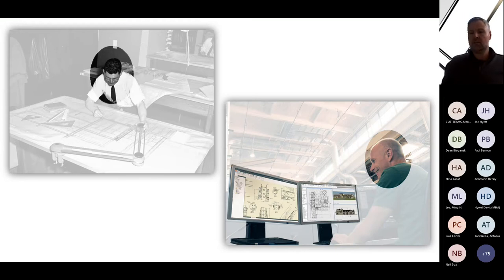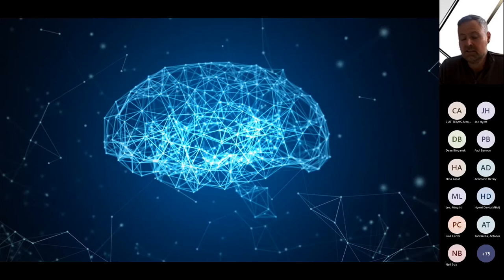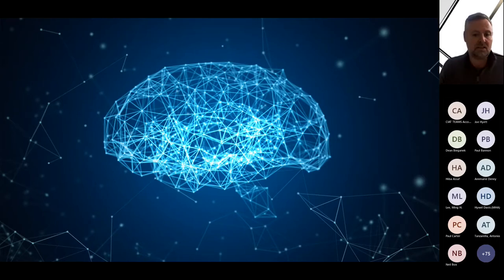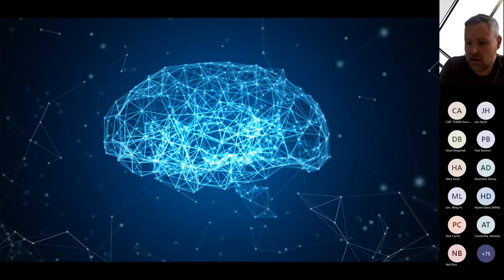If we combine the intelligence of those building professionals with algorithmic intelligence, then we think we can produce better buildings. At the same time, design projects are becoming more and more complex, and this is causing us to rethink the way we are able to make decisions. Research has shown that humans and machines working together can actually make better decisions, and they can do it more quickly.